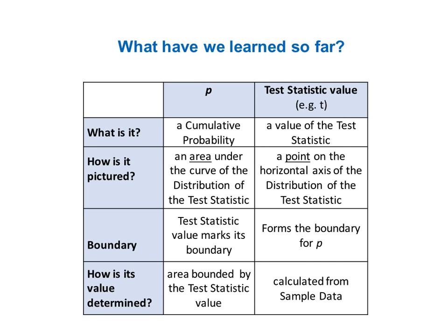This table summarizes what we have learned so far about the relationship between P and the test statistic. First of all, they are two different types of things. P is a cumulative probability and is pictured as an area under the curve of the distribution of a test statistic. The test statistic — like Z, T, F, or chi-square — is a point value on the horizontal axis of the test statistic distribution. The test statistic is calculated first and becomes the boundary for the area under the curve which represents P. The P value is calculated as the area under the curve bounded by the test statistic.